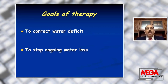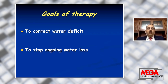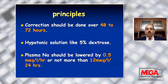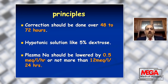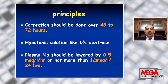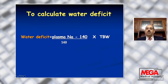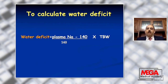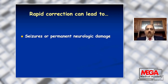The treatment goals are to correct water deficits and stop ongoing water loss. Correction should be gradual and slow over 48 to 72 hours using hypotonic solution like dextrose 5%, half-strength saline, or even tap water given through a nasogastric tube in comatose patients. Plasma sodium should be lowered by 0.5 mEq/L per hour and should not exceed 12 mEq/L in 24 hours. To calculate the water deficit: water deficit equals plasma sodium minus 140 over 140, multiplied by total body water — body weight times 0.6 for male and 0.5 for female. Rapid correction should be avoided as it results in seizures and permanent neurological damage.